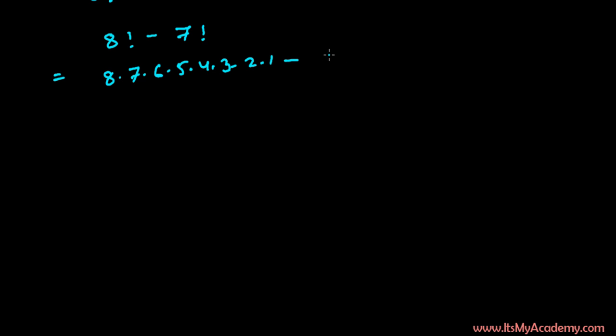And 7 factorial is 7 times 6 times 5 times 4 times 3 times 2 times 1. This is the linear method, the lazy method, the dumb method of solving factorials.